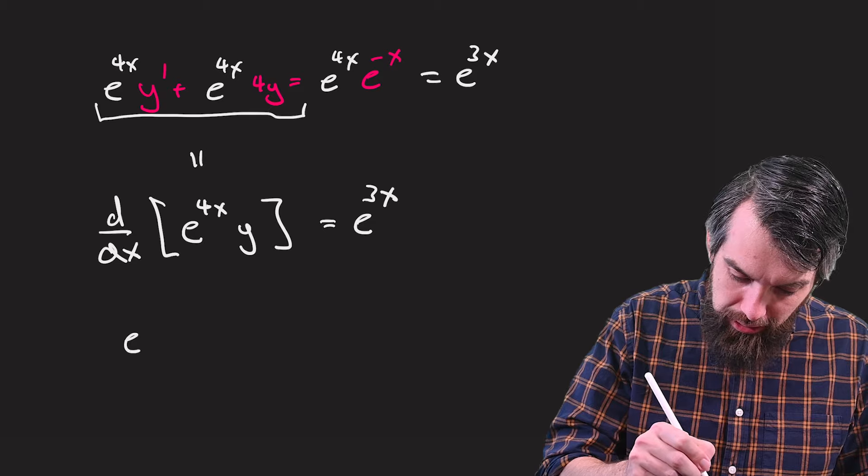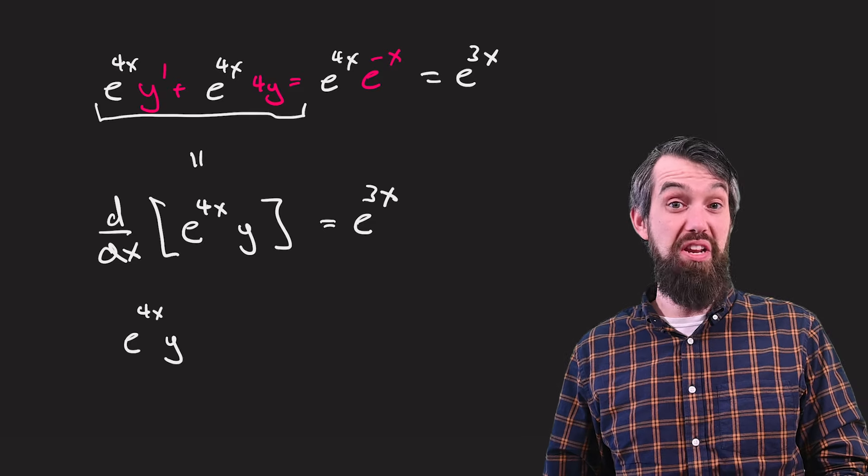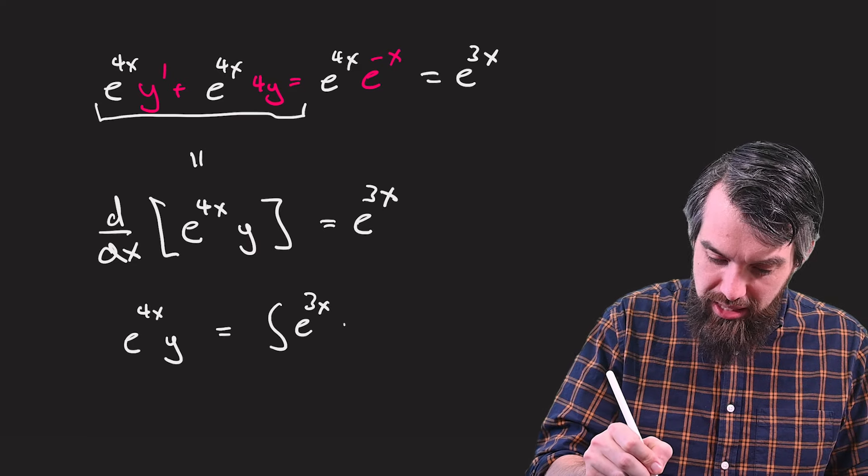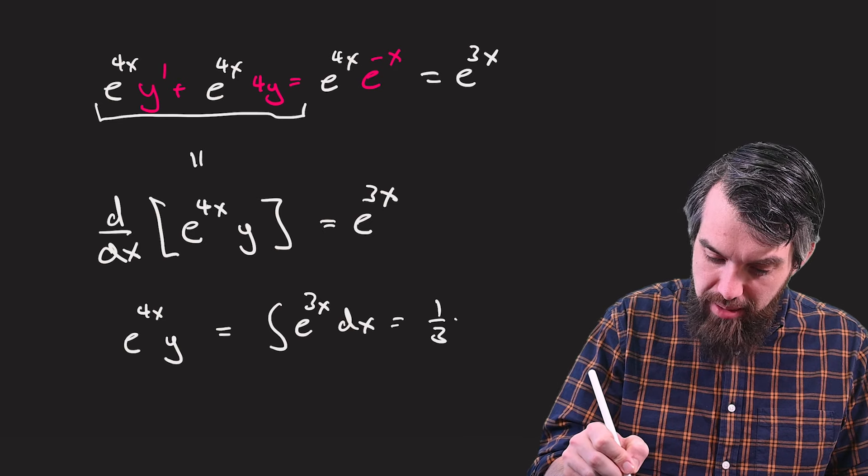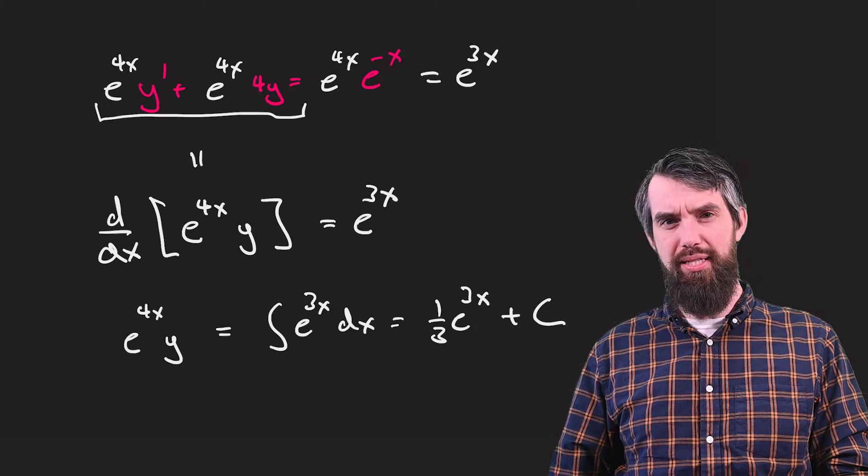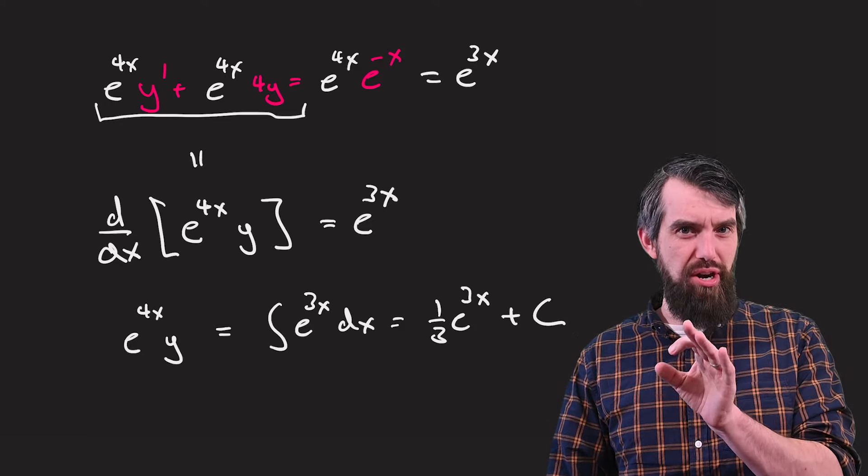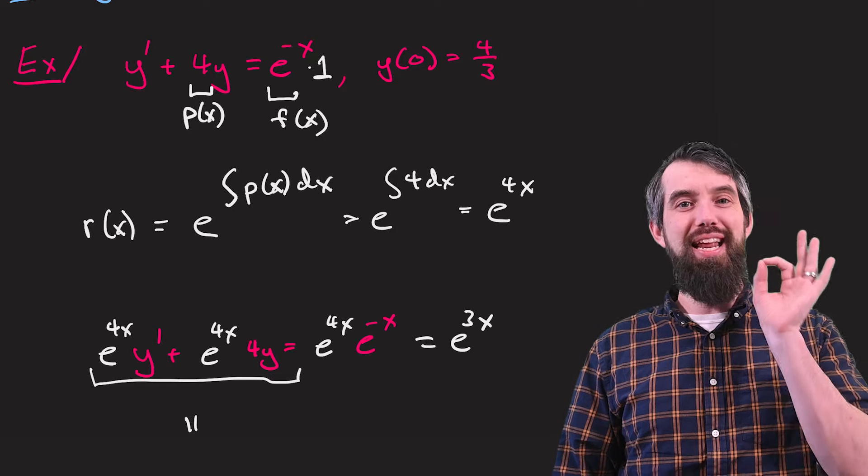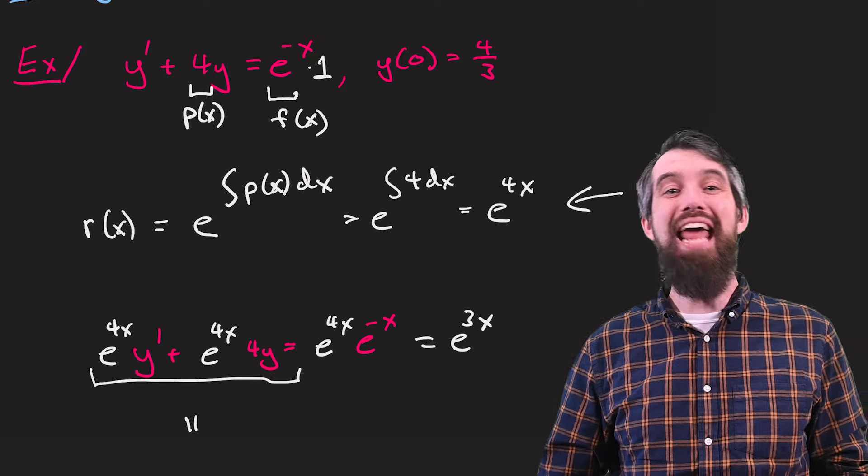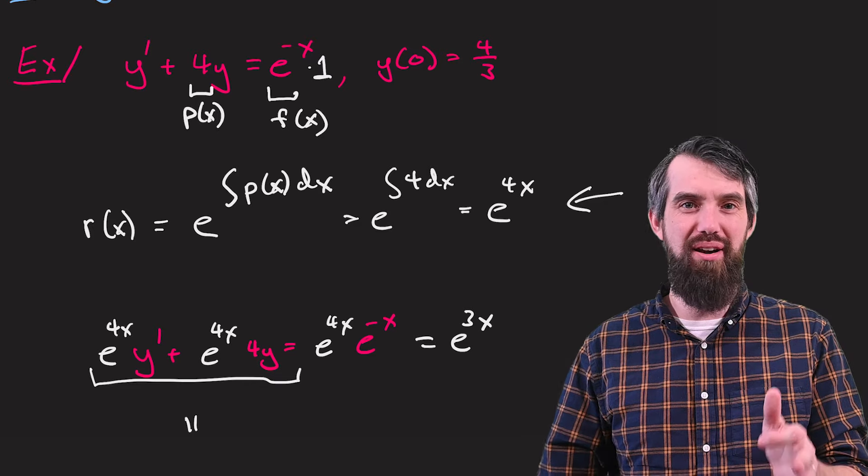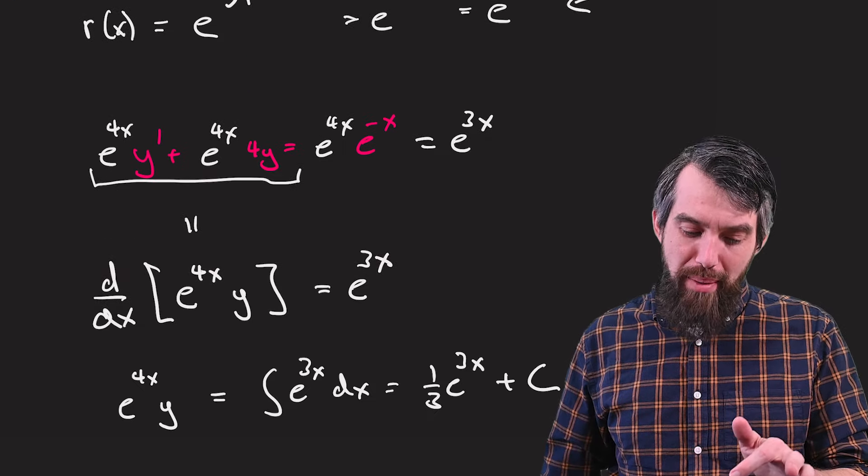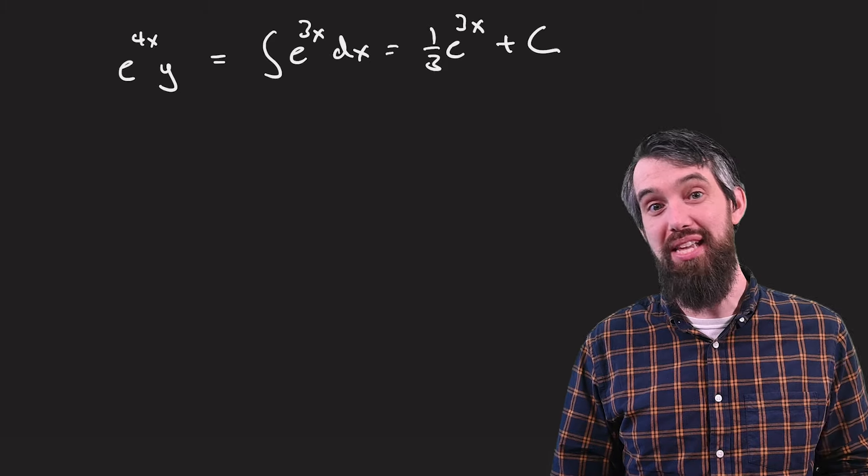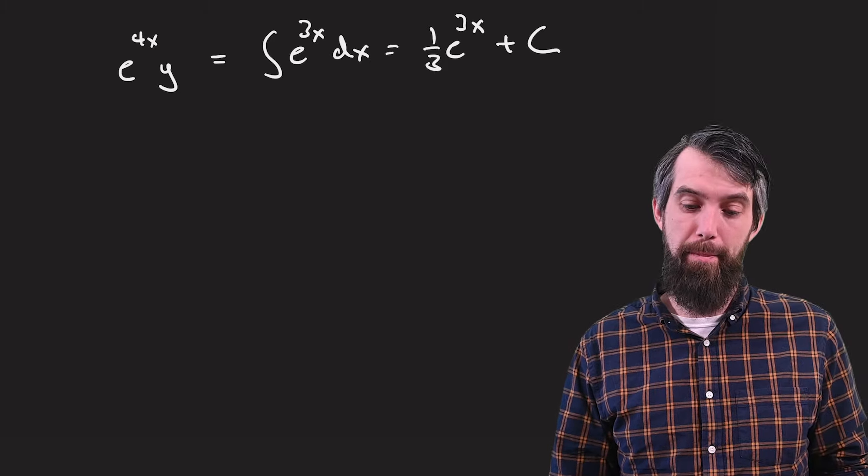Okay, so now I'm going to integrate, and that's going to give me on the left e to the 4x times y. All I'm doing here is just integrating a derivative so it cancels. And then this is the same thing as the integral of e to the 3x dx, which is 1 third times e to the 3x. And now I am going to write down a plus C. You didn't need to write down the plus C earlier because it was all about finding an integrating factor, and we just wanted any one that worked. But now I'm going to my solution, and I do want my plus C, and my plus C will be useful for my initial condition.